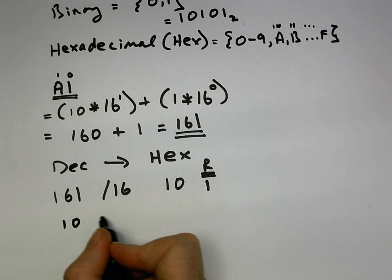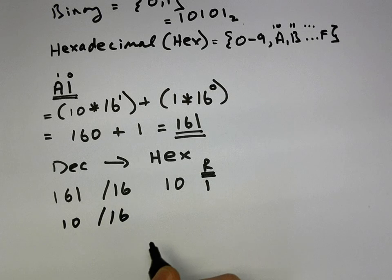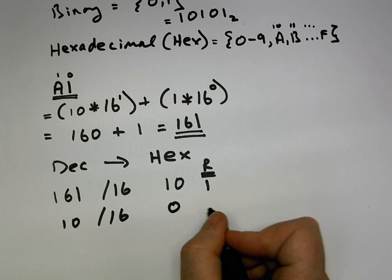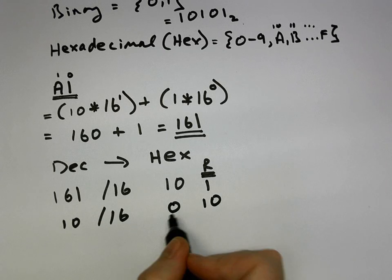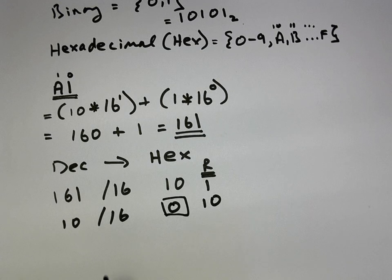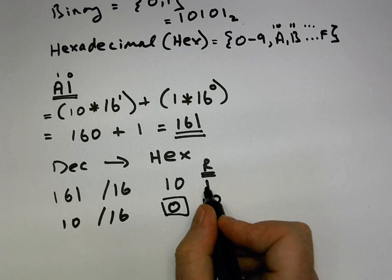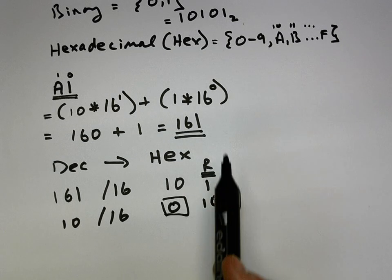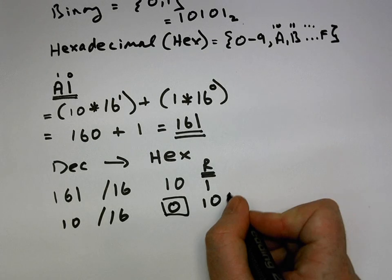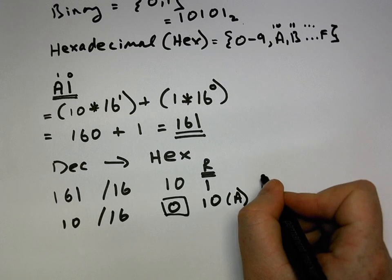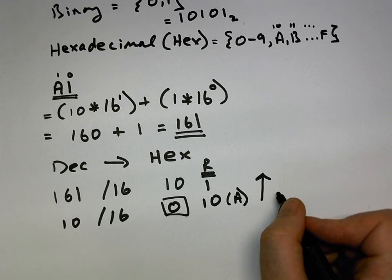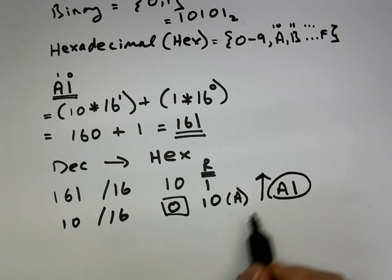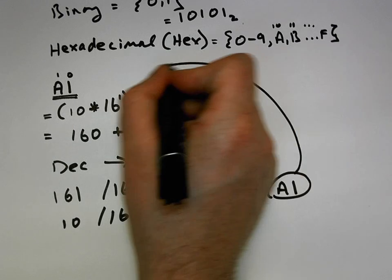So now we take the ten — ten divided by sixteen doesn't go, so we have zero, and we have a remainder of ten. Once we get to zero, we know we've finished. So now we have ten and one. One is a valid representative of an alphabet character from the hexadecimal alphabet. Ten in the alphabet is actually represented by A. So once we have all the remainders, we read back up again, and we get A1 — which is the same as what we started with.